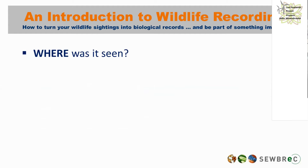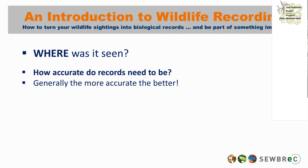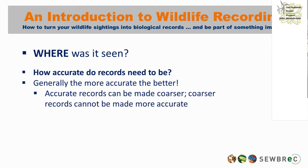A common question is: how accurate do records need to be? The general rule is that the more accurate the better. Accurate records can always be made coarser — a detailed 10-metre grid reference can be displayed at 100m, 1km, or even 10km resolution to feed into national distribution maps. But if you record at a very coarse resolution, you can't put that detail back in. The better the data we capture, the more uses it can be put to — record it once and use it many times.